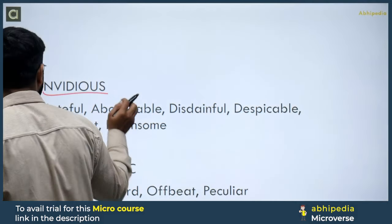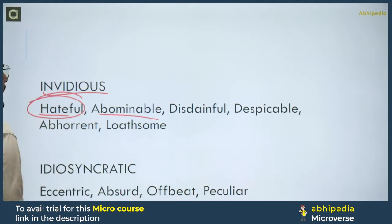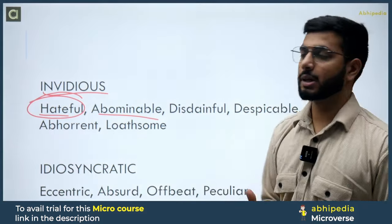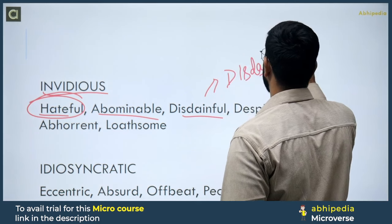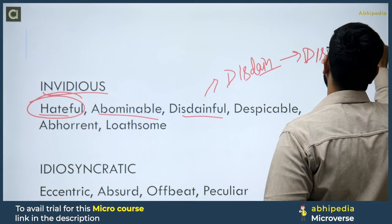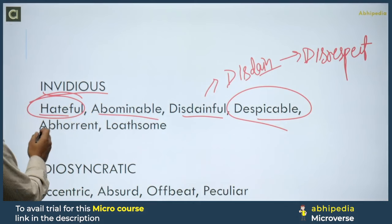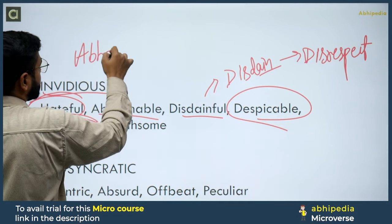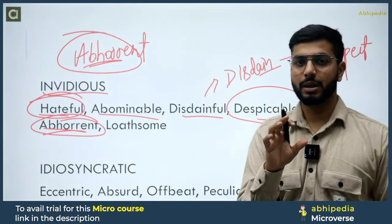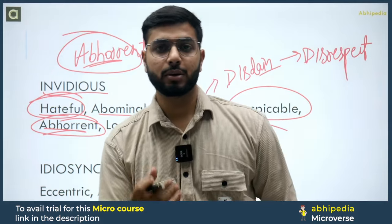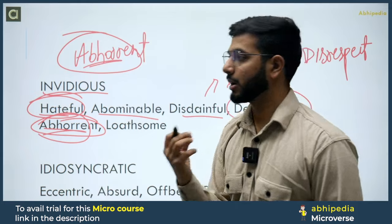The next word is Invidious. Invidious का मतलब होता है Hateful — abominable. Abominable means that which you hate/despise. Disdainful: Disdain means to disrespect someone, so disdainful means showing disrespect or contempt. The next word is Despicable — also meaning disrespectful, abhorrent. Abhor: think of the early morning 'bhor' (dawn) — if someone wakes you up at that time daily, slowly your annoyance turns to hatred. So Abhorrent means to hate someone deeply.